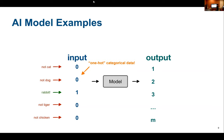One benefit of one-hot encoding is that we can make probabilistic predictions — for example, 70% sure it's a rabbit, 20% sure it's a dog, 5% cat, 5% chicken, 0% tiger. On the input side, a one for rabbit means we're 100% sure it's a rabbit; zeros mean zero percent for everything else. On the output side we could have values like 0.9 and 0.1, meaning 90% confidence for a given class.